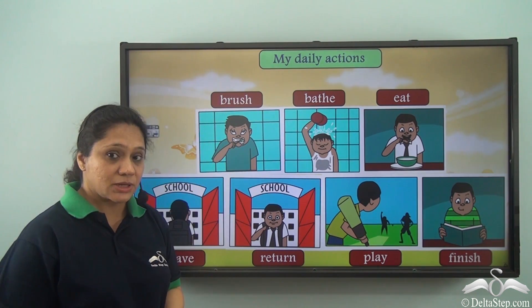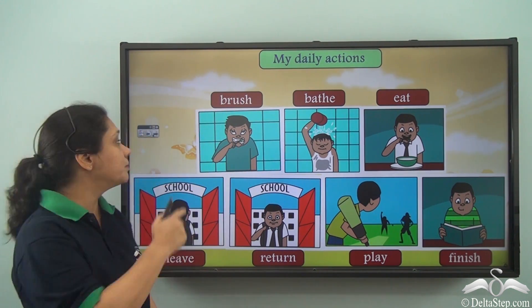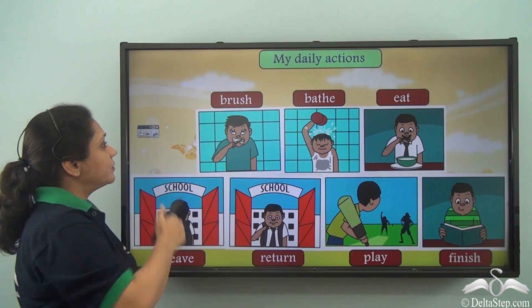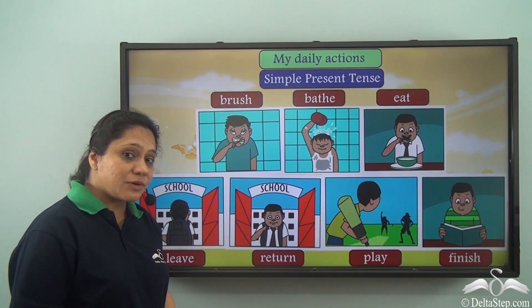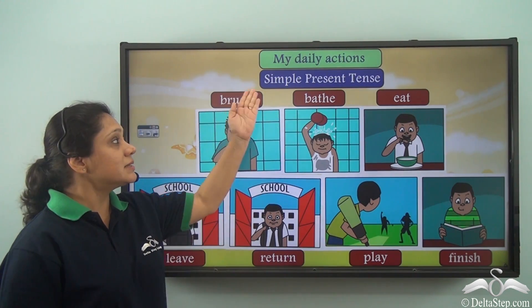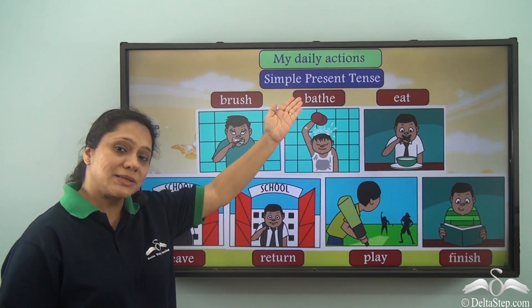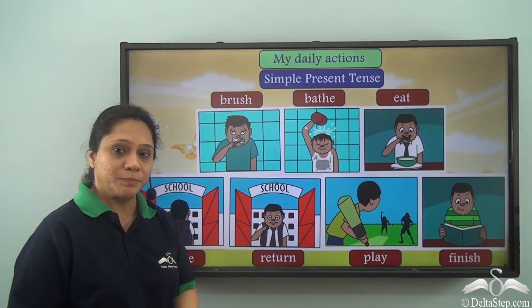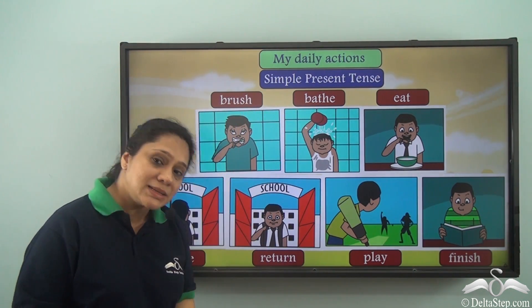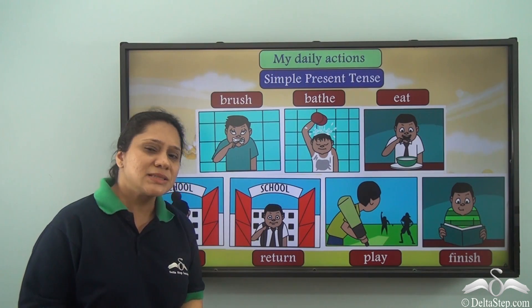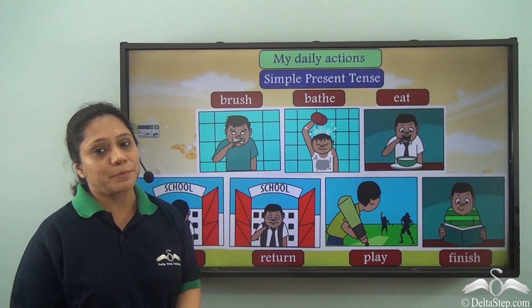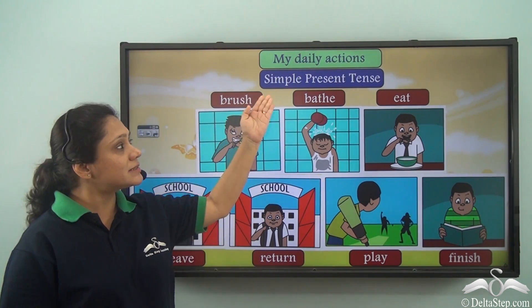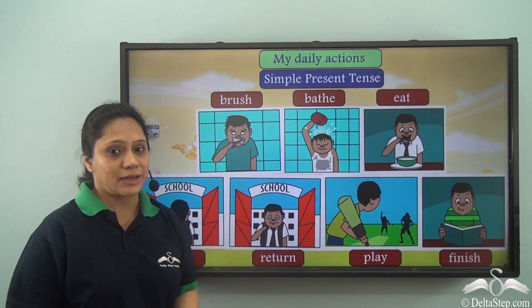If you see, all these verbs are in the original form and they tell us about my daily actions. So these verbs are in the simple present tense. Let us learn some more examples about the simple present tense.